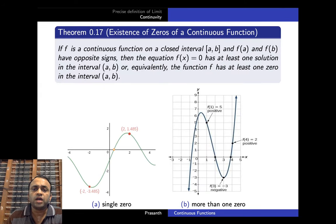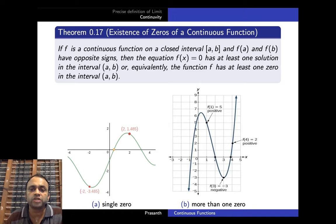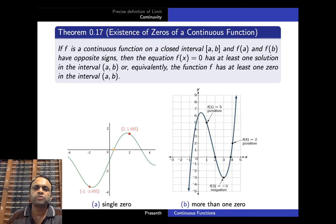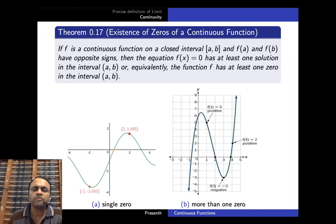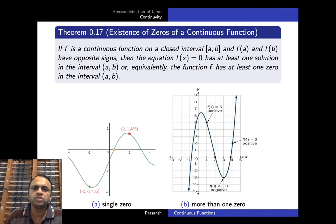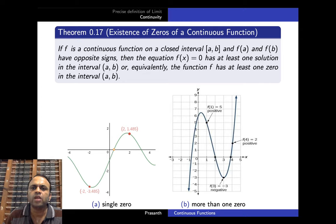As a continuation of the Intermediate Value Theorem, there is another result we will use frequently when studying the real number system or real analysis: the existence of zeros of a continuous function. A zero of a function means an x such that f(x) = 0. If f is a continuous function on a closed interval [a, b] and f(a) and f(b) have opposite signs, then f(x) = 0 has at least one solution in the open interval (a, b) — equivalently, the function has at least one zero in (a, b).